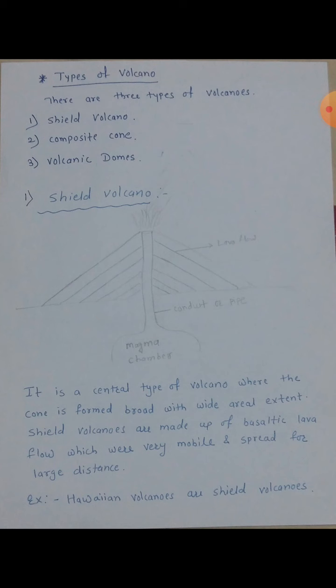So it is a central type of volcano, where the cone is formed broad with wide aerial extent. Cone kasa aste — broad form zhalela aste, pasar lela aste with wide aerial extent. Aani tana jast jaga cover ke le liya aste. Jai wala material baahir yeto, taya wala te surface var aale aani surface var aale nantar te long distance var area cover karta. Aani toh broad form hoto.